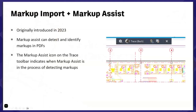Markup import and markup assist was originally introduced in 2023 - so it's not only in 2024. Markup assist can also detect and identify markups in PDFs. You can have a PDF that was marked up in Adobe or another software, and it'll bring that PDF in and overlay on top of your drawing. The markup assist icon is found on the trace toolbar, which indicates when markup assist is in the process of detecting the markup.